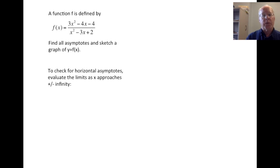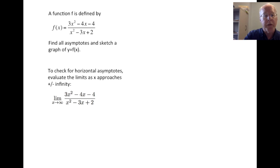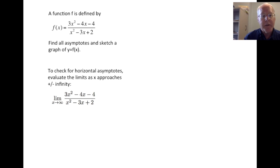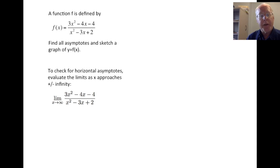We'll check for horizontal asymptotes first. Remember those are found by evaluating the limits as x approaches infinity or minus infinity. So we have two limits to work with here. Let's start with the limit at infinity. By the way, such a quotient of two polynomials is called a rational function.